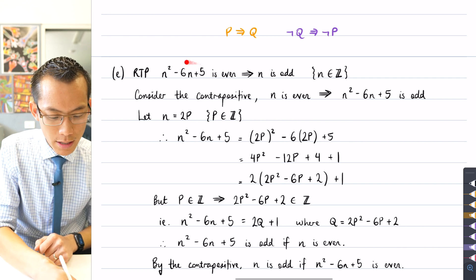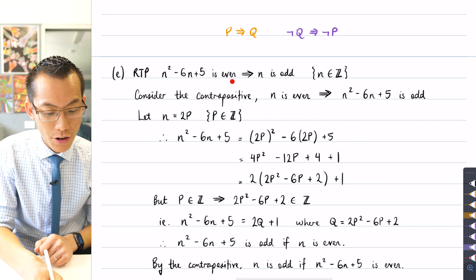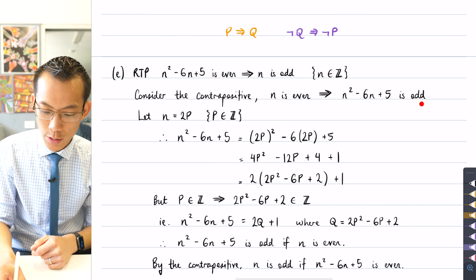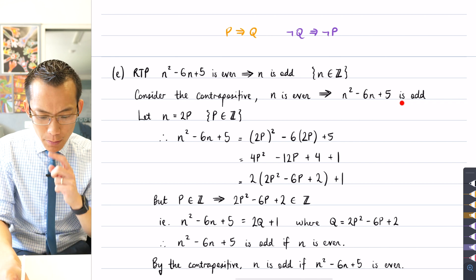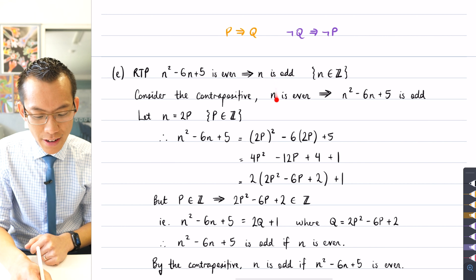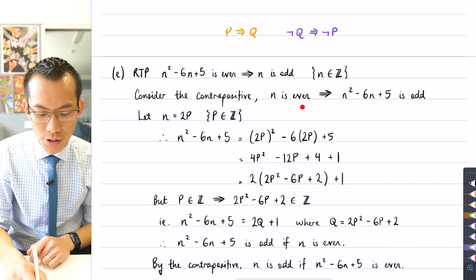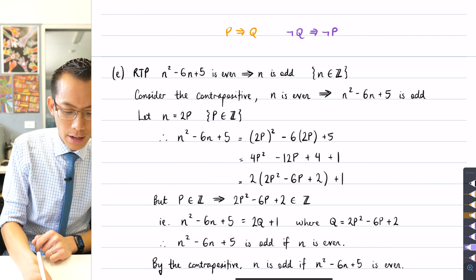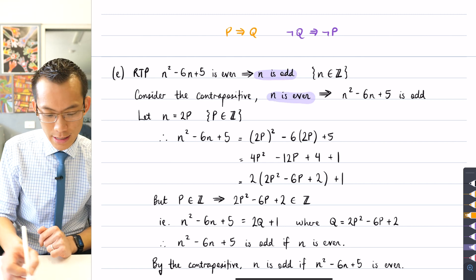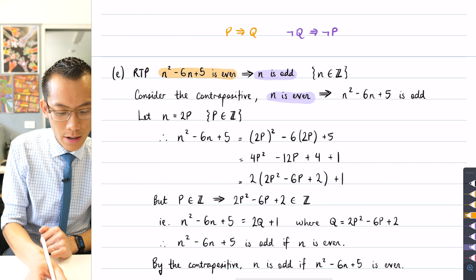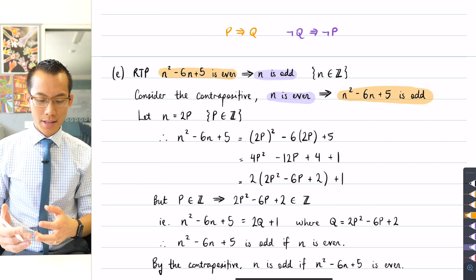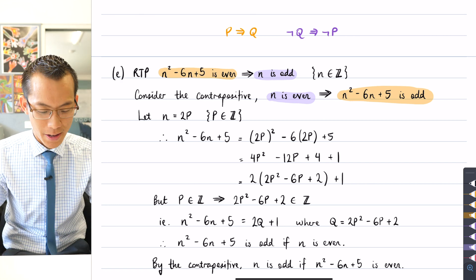If I'm calling this part p, then not p would be n² - 6n + 5 is odd, which sure enough is what you can see down here on the end. So there's my not p, and then what is not q? Well, if q is 'n is odd,' then not q is 'n is even.' So you can see what I've done: I've taken this one, I've negated it and put it first, and then exactly the same way, there's this one, I've negated it and then I put it last. So happy times, this is the contrapositive, and now I can work with it.